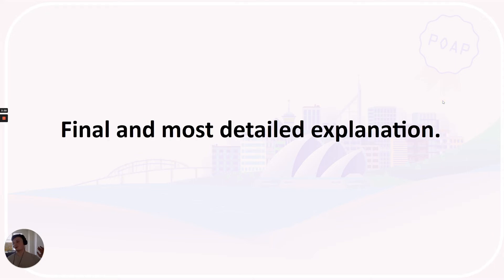Then you'll get to the conclusion of the Twitter Spaces or whatever platform you're on. Here you're going to give your final and most detailed explanation. Reiterate that attendees will need the POAP app to put in the secret word to claim the POAP. Say that they can only claim this POAP right now and for about 10 minutes after the spaces closes.